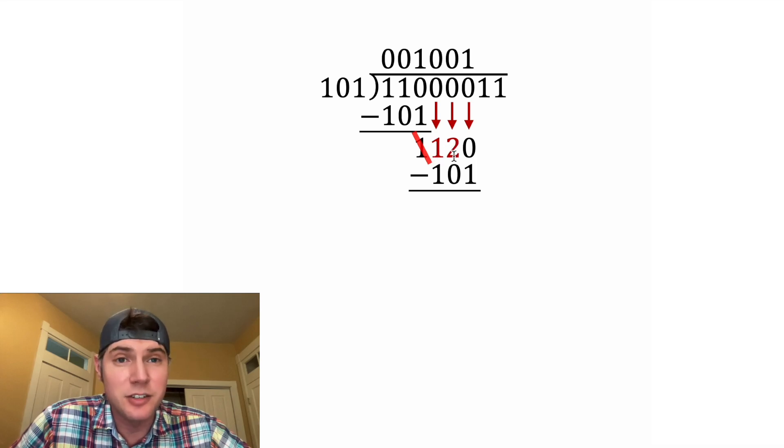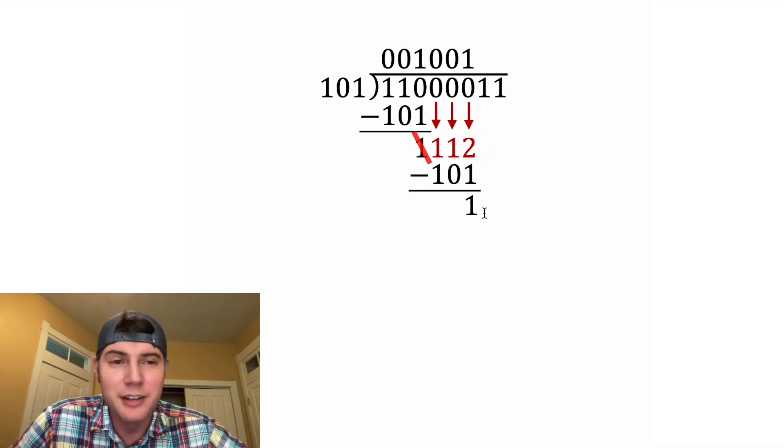And the same thing, we'll borrow from this 2, make it a 1, and make this a 2. Now we subtract 2 minus 1, we get 1. 1 minus 0, we get 1. 1 minus 1, we get 0. So we end up with 011. Now let's clean this up.